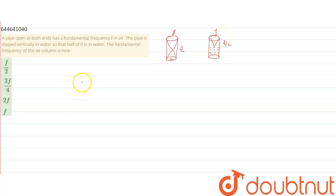So now as we know that length in open pipe will be equal to lambda by 2, L by 2 length in open pipe.